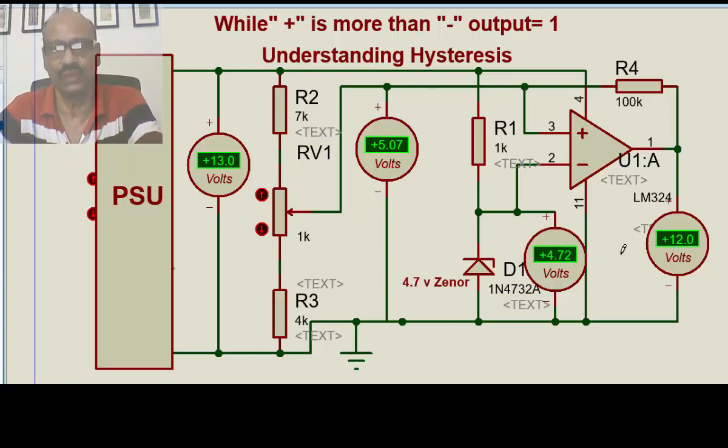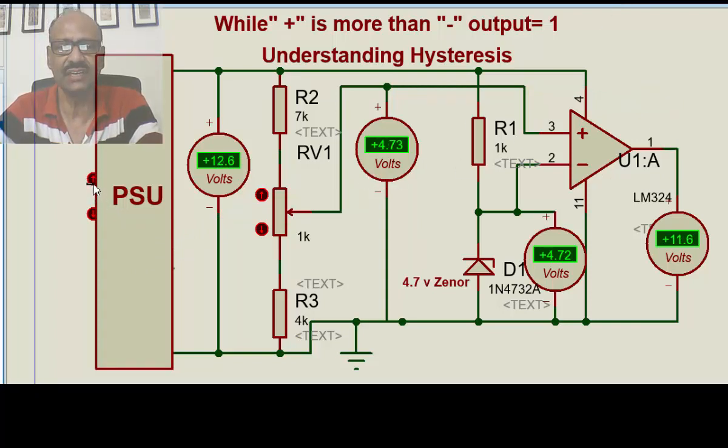It is very important in voltage stabilizers where we use, if we do not use this feedback resistor, positive feedback resistor, the relay chattering will take place. Why the relay chattering will take place? We have seen that. How the relay chattering is taking place? When the voltage is just changing from 12.6 to 12.5, the output becomes 0 at 12.5 and the output is high at 12.6, just with 0.1 volt.